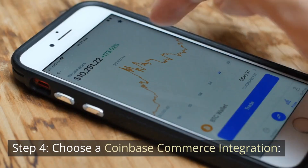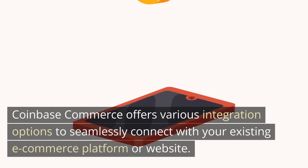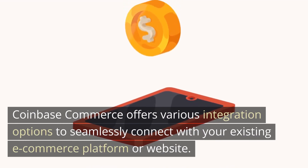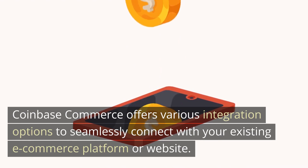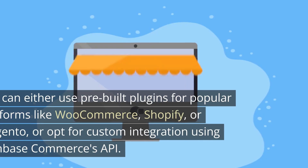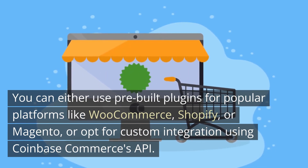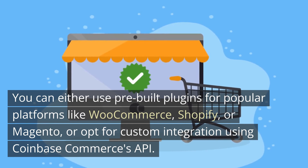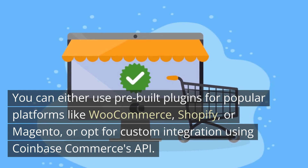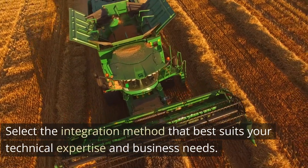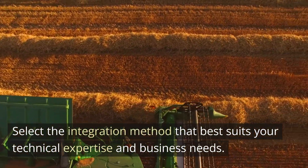Step 4: Choose a Coinbase Commerce Integration. Coinbase Commerce offers various integration options to seamlessly connect with your existing e-commerce platform or website. You can either use pre-built plugins for popular platforms like WooCommerce, Shopify, or Magento, or opt for custom integration using Coinbase Commerce's API. Select the integration method that best suits your technical expertise and business needs.